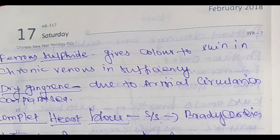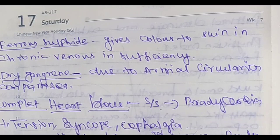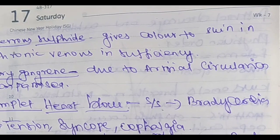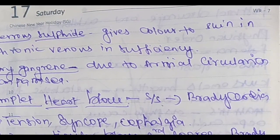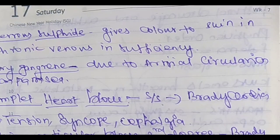In the important golden points, first point: the color given to the skin in chronic venous insufficiency. In chronic venous insufficiency, the color is given by ferrous sulphide — note, not ferric chloride, don't confuse. Ferrous sulphide gives the color to the skin in chronic venous insufficiency.